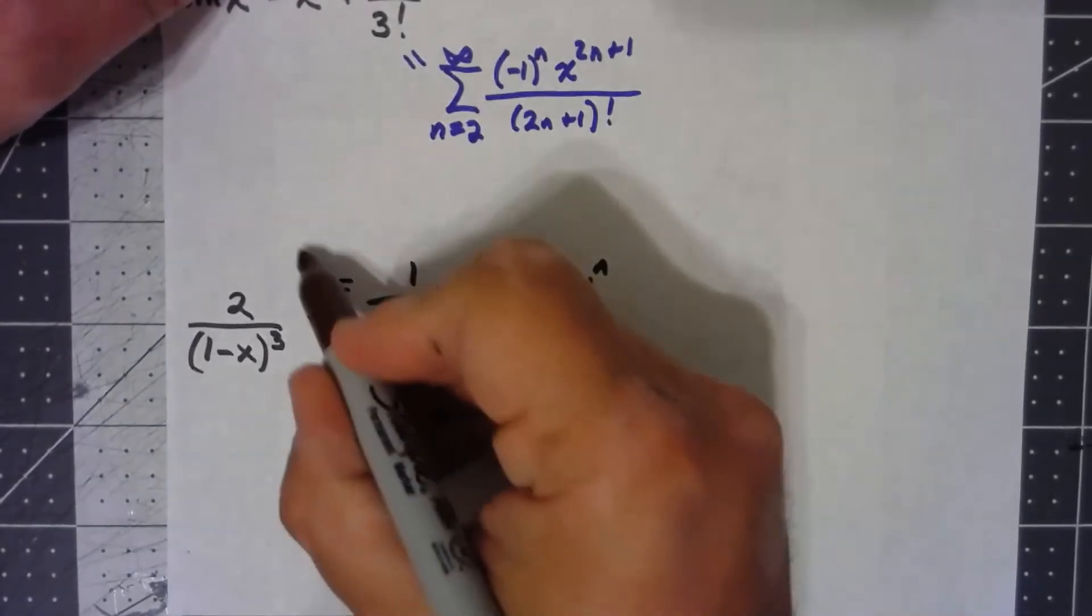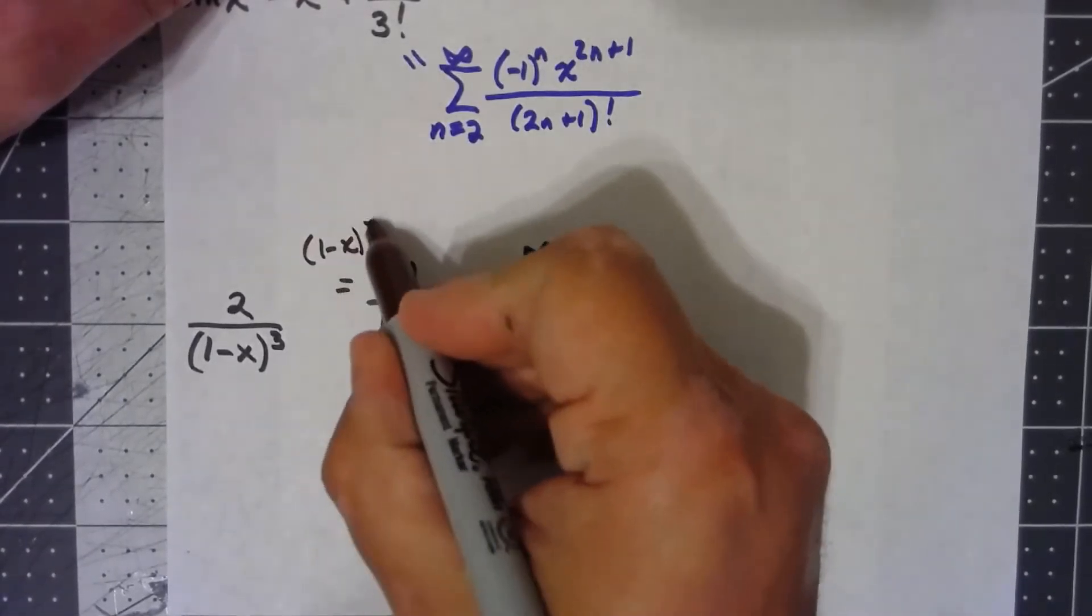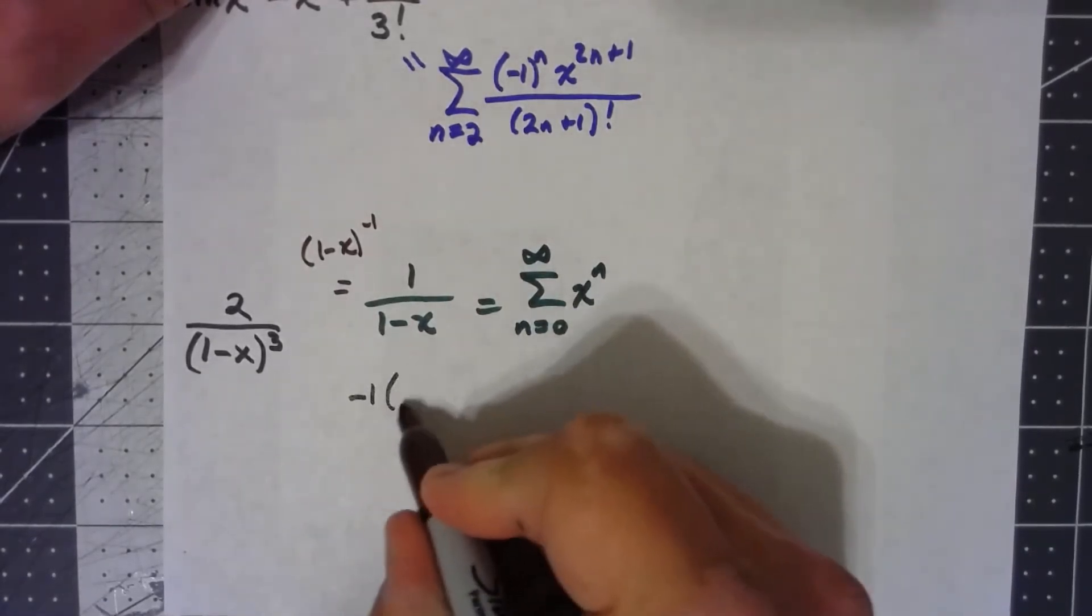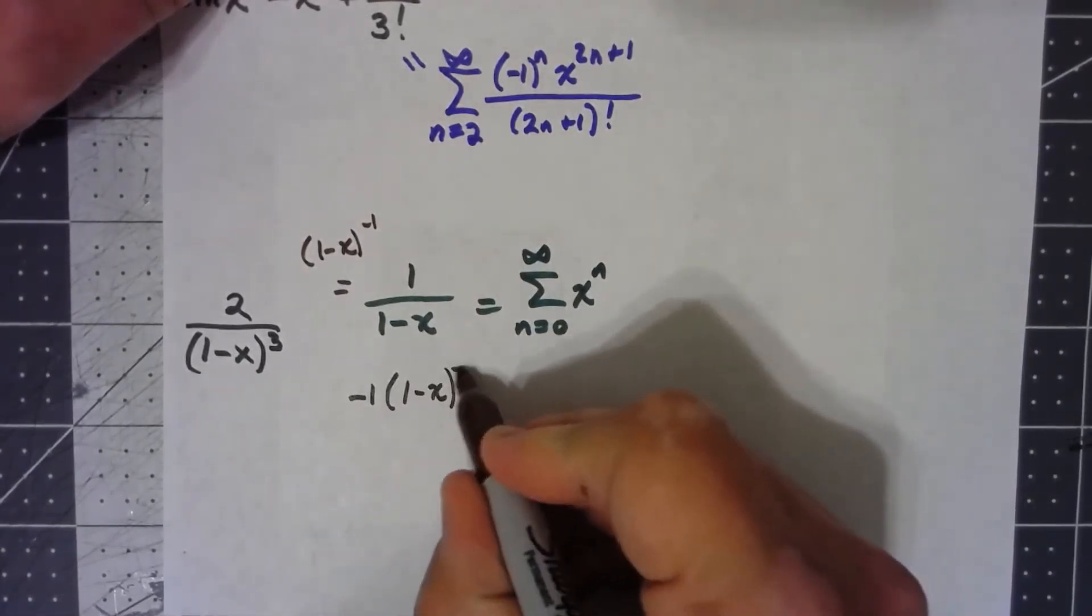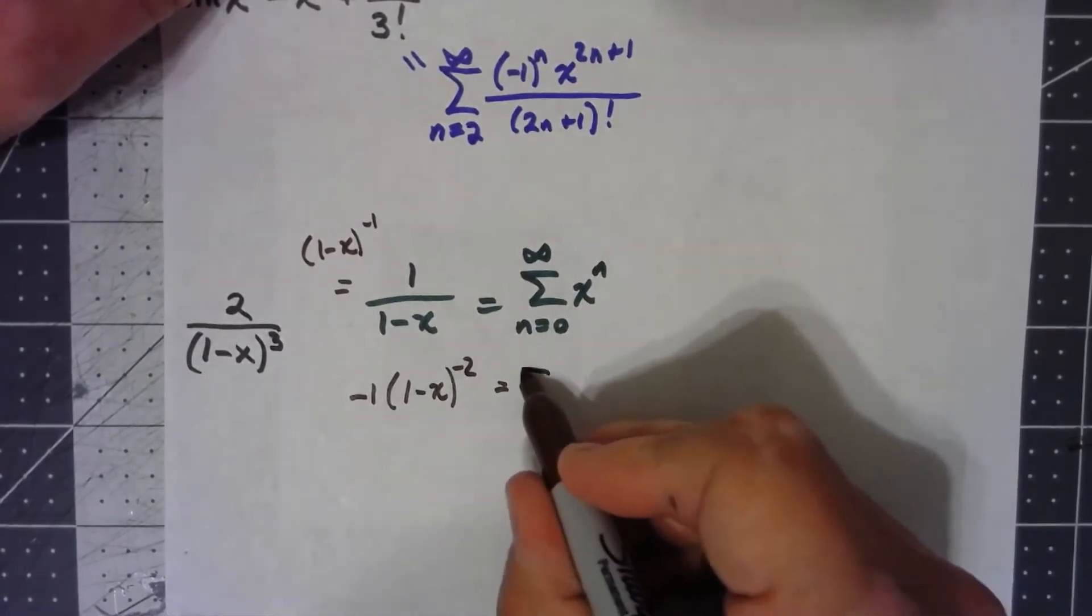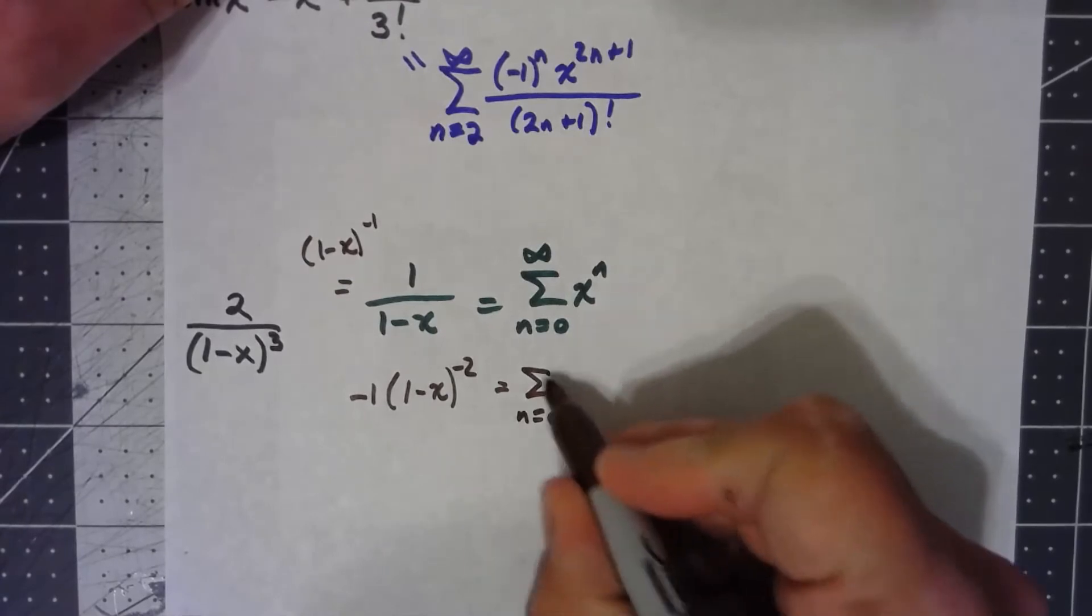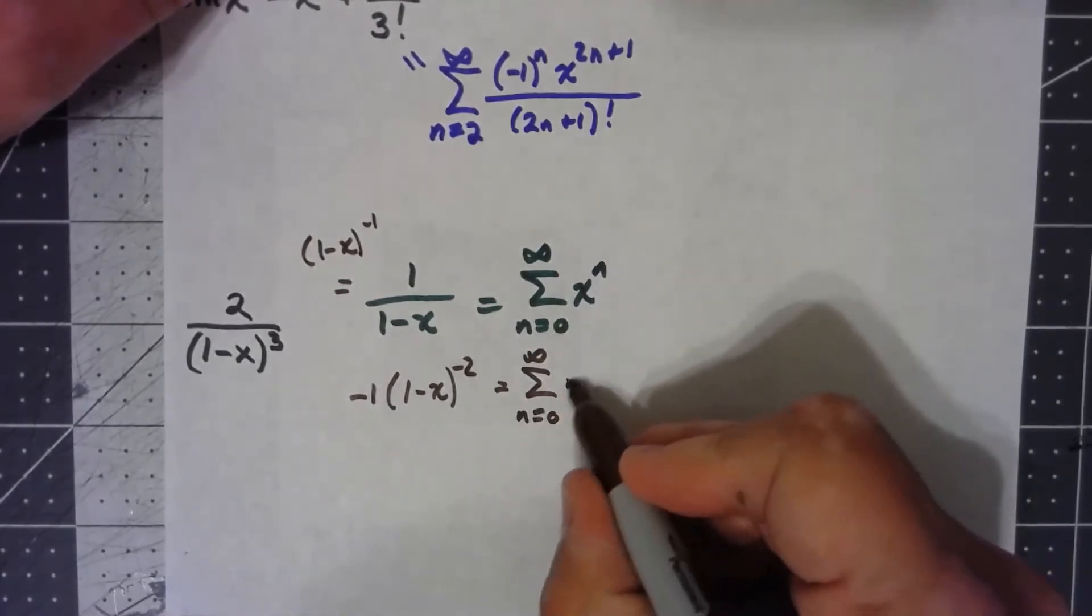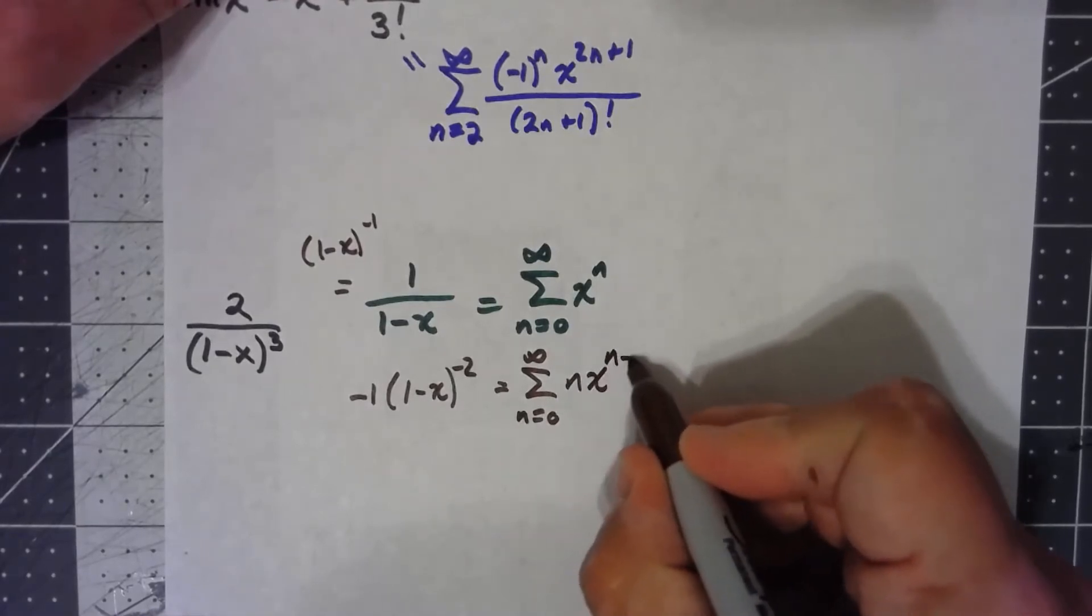Okay, if I think about this as being 1 minus x to the negative 1, the first derivative would be negative 1 times 1 minus x to the negative 2, and over here, multiply by the power, so n subtract 1 from the power.